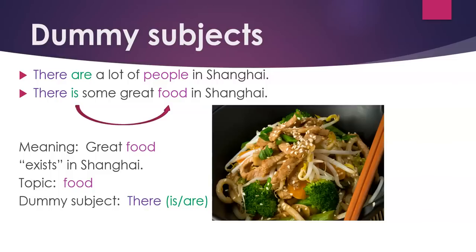Are there other dummy subjects? Yes, there are. For example, 'There are a lot of people in Shanghai.' 'There is some great food in Shanghai.' The meaning of this sentence is: great food exists in Shanghai. The topic, of course, is food, but since it comes later in the sentence, we use a dummy subject at the beginning. The dummy subject there is usually followed by is, are, seems, or another form of the verb be.